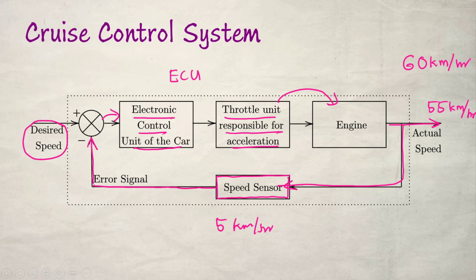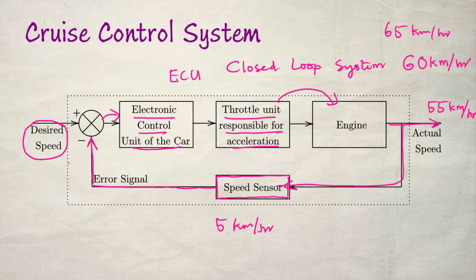If there is a downward slope, the vehicle speed may increase to 65 km/h. The speed sensor again gives instruction to the ECU, which takes the decision and maintains the speed at 60 km/h. Here the input signal is the desired speed we set, and the output signal is the actual speed at which the car is moving. The entire cruise control system is the example of a system, and for more study on closed loop systems, there is a subject called control systems.